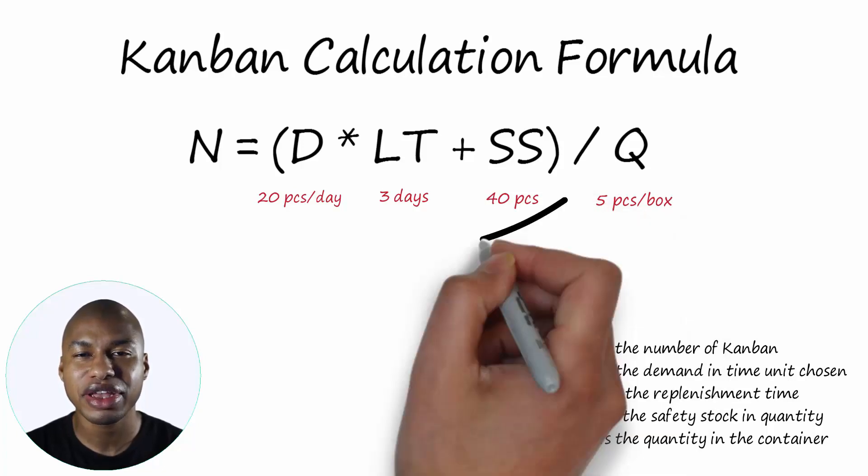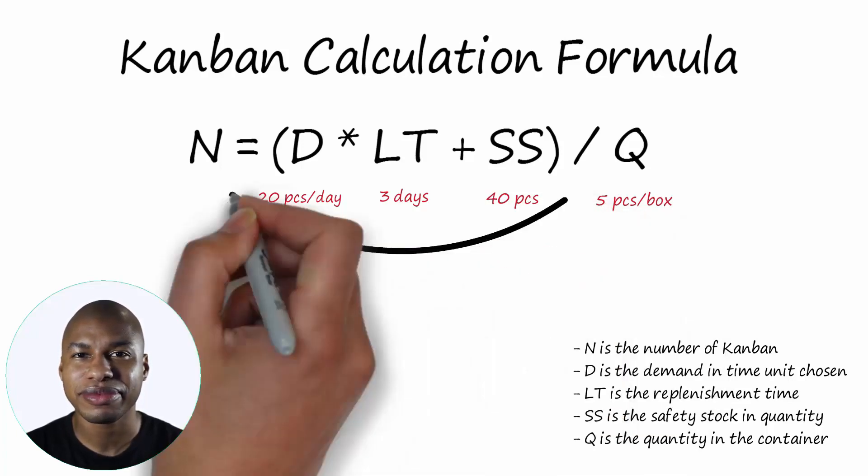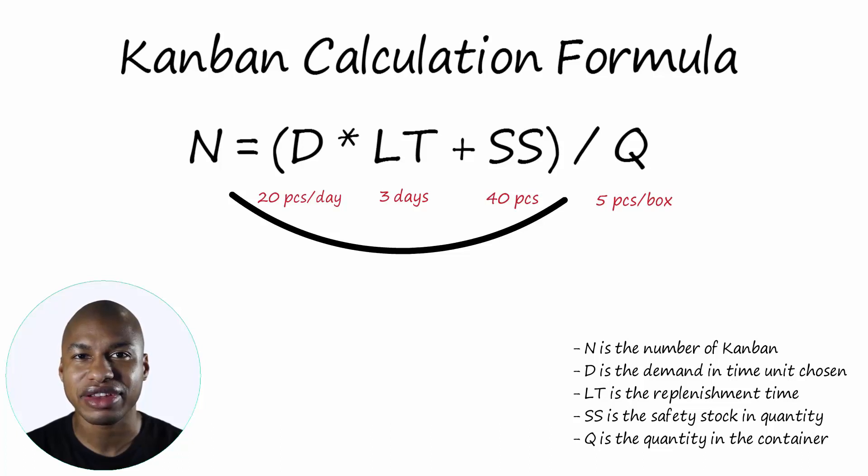The parts are delivered in a box of 5 pieces. Hence, the number of Kanbans to start will be: N equals 20 pieces a day times 3 days plus 40, all divided by 5, equals 100 over 5 equals 20 Kanban.